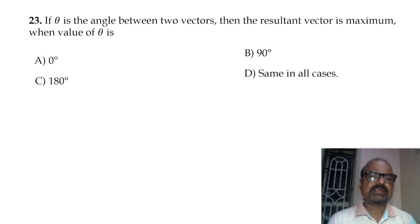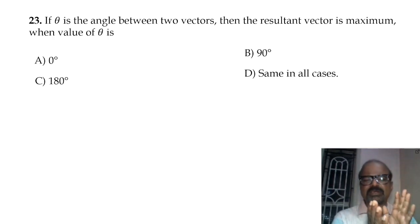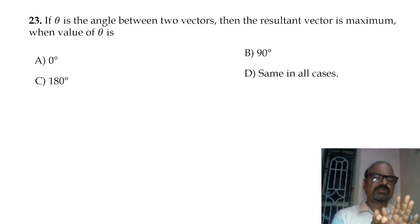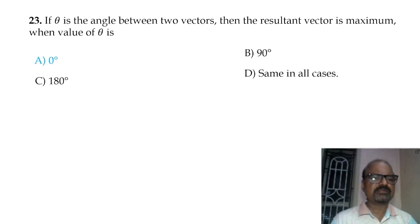If theta is the angle between two vectors, then the resultant vector is maximum when the vectors are in the same direction, i.e., the angle between them is 0 degrees.